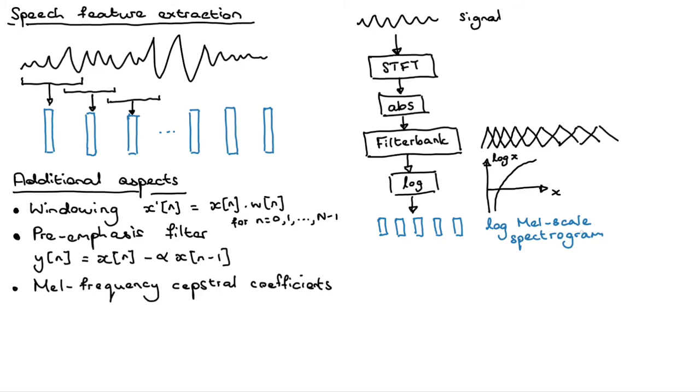Last thing that I want to talk about is something called mel-frequency cepstral coefficients. This is another type of features instead of using log mel-scale spectrograms or filter banks. Mel-frequency cepstral coefficients actually just add two more blocks to the pipeline here. The blocks are actually pretty simple.